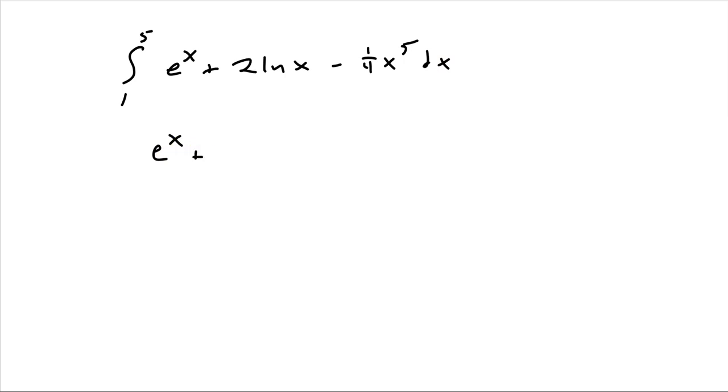Now, what is the antiderivative for 2 times the natural log of x? So natural log of x, if you don't remember the antiderivative for that, that is x ln(x) minus x. So 2 times x ln(x) minus x, minus... Now we have to add 1 to that exponent and then divide by it. So that would be 6. So 4 times 6 is 24. 1/24 x^6.